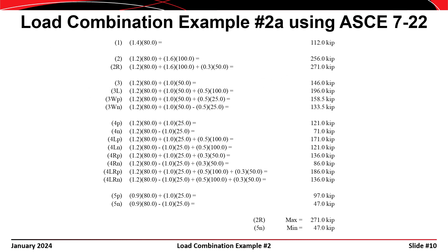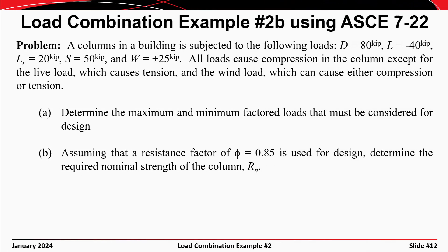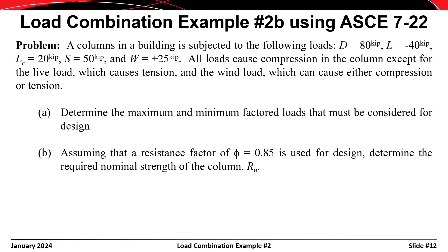Finally, as a check, here are the results of a spreadsheet I constructed to evaluate all possible permutations of load combinations 1 through 5. As a follow-up, let's consider a slightly different version of the same problem. Suppose the live load in the column is now 40 kips acting in tension instead of 100 kips acting in compression, with all other loads remaining unchanged.